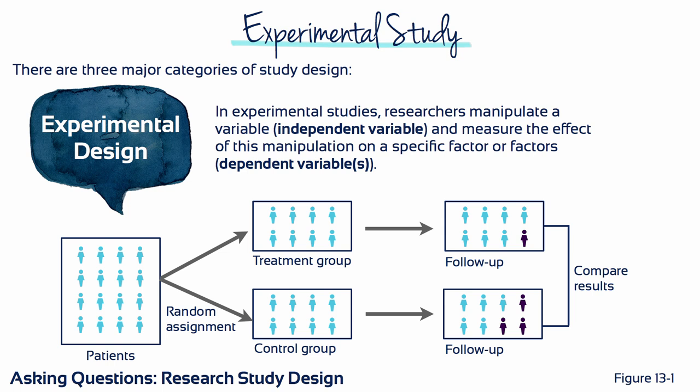Experimental studies are randomized controlled studies or randomized controlled clinical trials. These studies have a dependent and an independent variable. It is easy to remember the difference between the two because the quantity of the dependent variable depends on whether the subject was in the experimental group or the control group — in other words, it depends on the level or amount of the independent variable that the subject was exposed to.